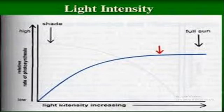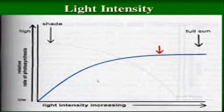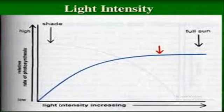As light intensity increases, the rate of photosynthesis increases and eventually levels off. Light energy is directly proportional to the rate of photosynthesis process.